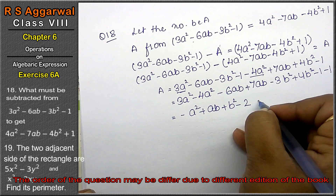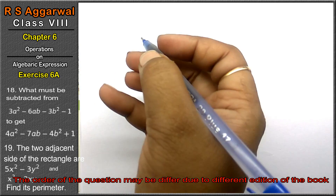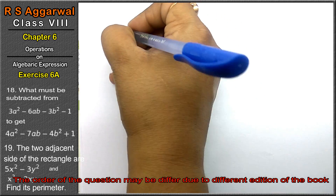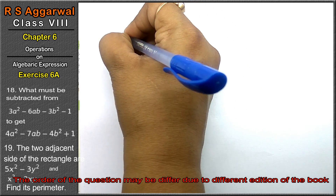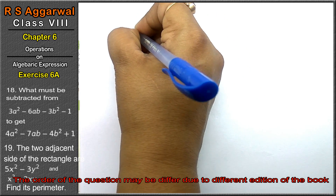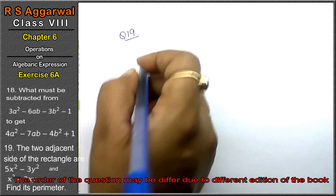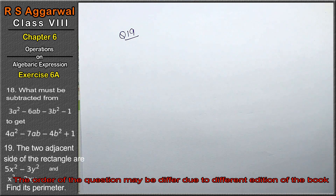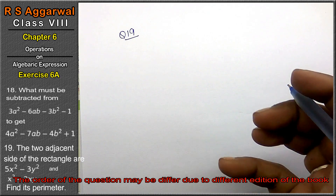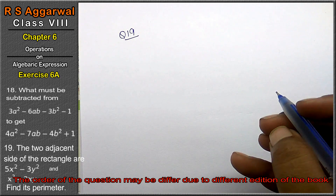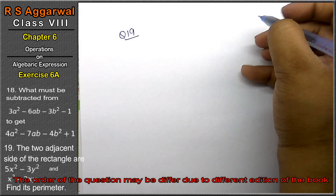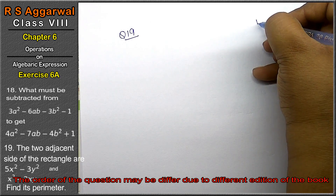Let's do question 19 of Exercise 6A, algebraic expression. Question 19 involves finding the perimeter of a rectangle with given algebraic expressions as dimensions.